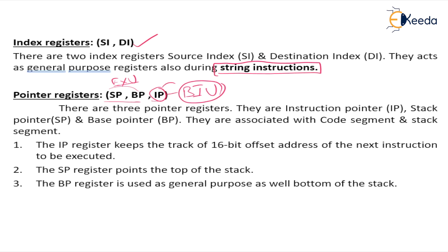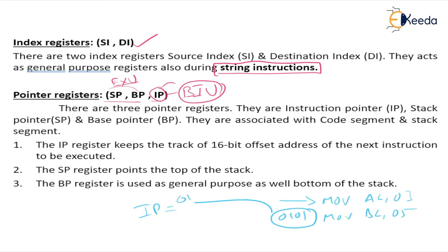The instruction pointer holds the address of the next instruction to be executed. In microcontrollers, this is called the program counter — it holds the address of the next instruction to be executed. For example, consider 'MOV AL, 03' and 'MOV BL, 05'. While executing MOV AL, the IP holds the address of the next instruction (e.g., 0101), so IP always contains the address of the upcoming instruction.